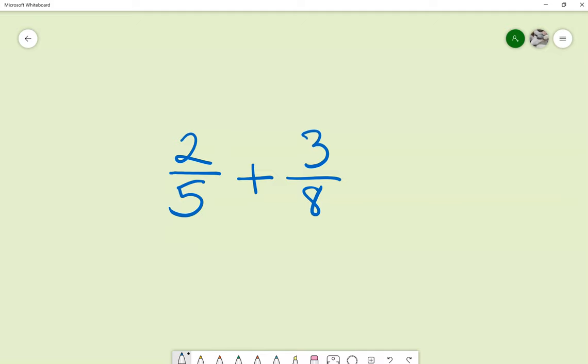If I have the fraction, for example, 2 fifths and I need to add it to 3 eighths, most of the time the students needed to take time finding the least common denominator.